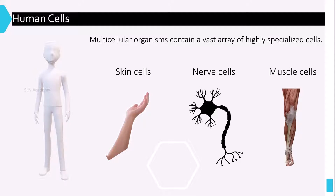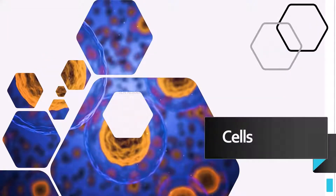Muscle cells are long tubular cells that help in movement. There are plenty of different types of cells present in the human body, each with a specialized functionality. Let us have a look at them.